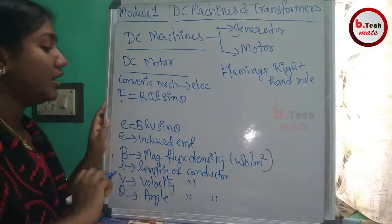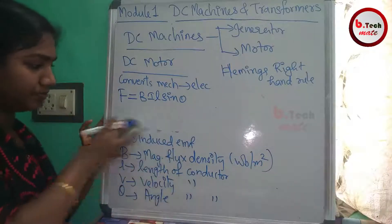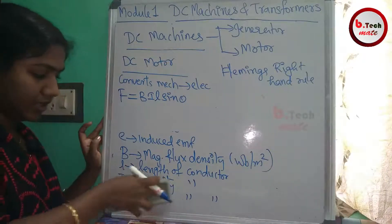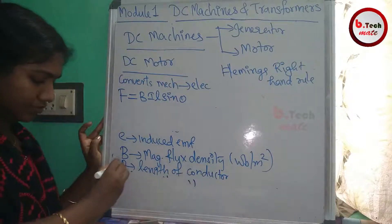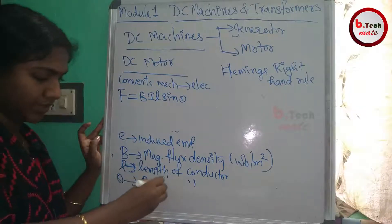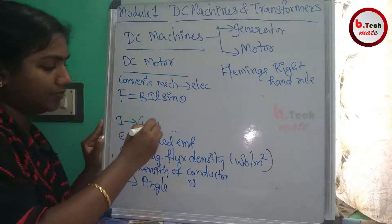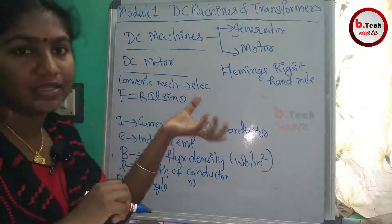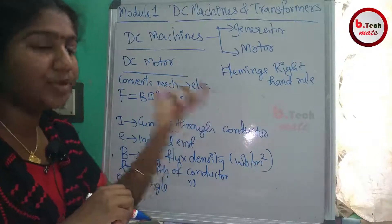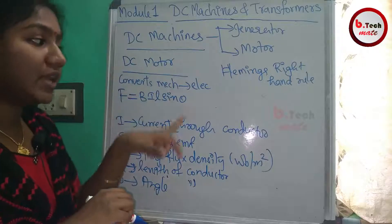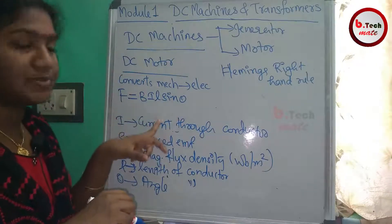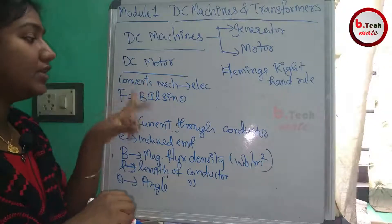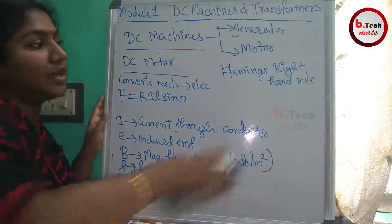In the force equation F = BIL sinθ: F is the force, B is the magnetic flux density, I is the current through the conductor, L is the length of the conductor, and θ is the angle of the conductor. When a current-carrying conductor is placed in a magnetic field, a force is experienced, resulting in the movement of the conductor.